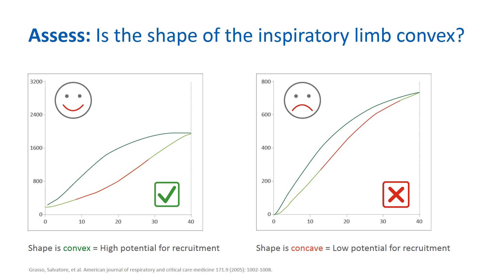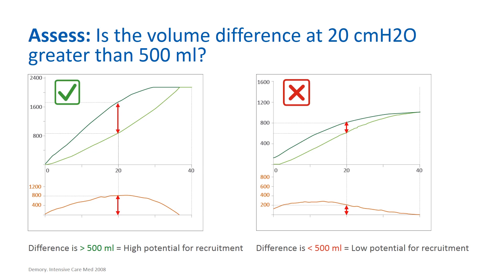To further assess potential for recruitment, a measurement of the difference in volume between the inspiratory limb and the expiratory limb at 20 centimeters of water pressure is required. To view this difference, touch the PV tool graphics panel and select the pressure over volume plus pressure over delta volume, or DV graph option. Following this, select cursor 1 and turn the PNT knob to the right until the cursors are set at 20 centimeters of water pressure on the x-axis. From here, you can directly measure the difference in volume using the plot below the curve or the direct measurement on the right side of the screen.